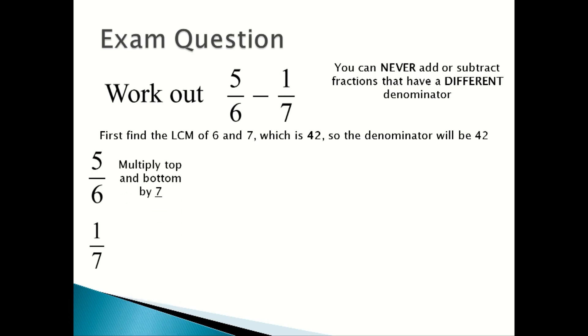5/6, you multiply the top and bottom by 7, and then 1/7, you multiply the top and bottom by 6. 5/6 will become 35/42, and 1/7 becomes 6/42.